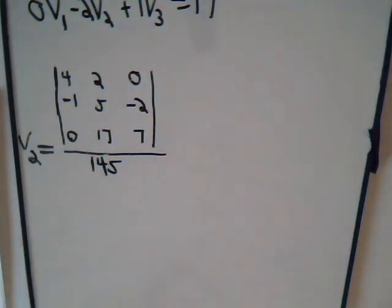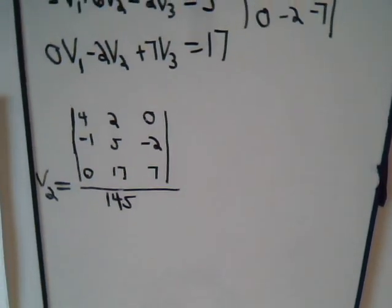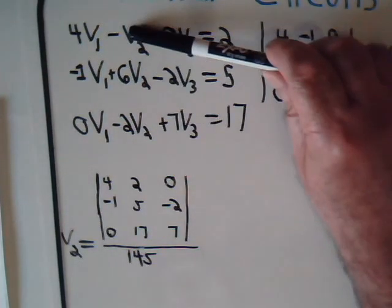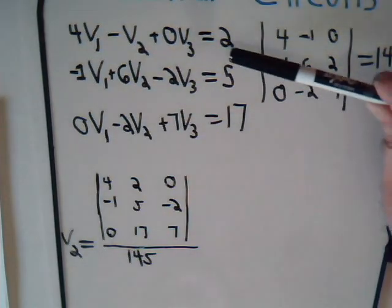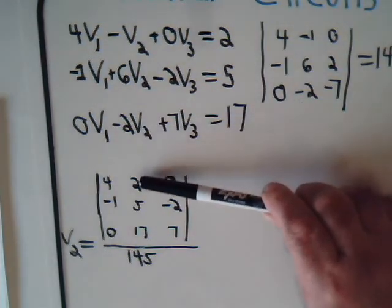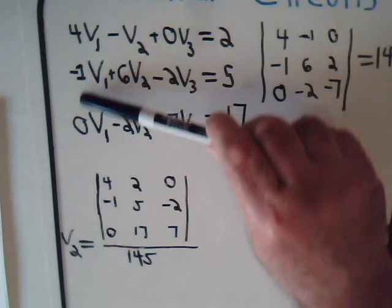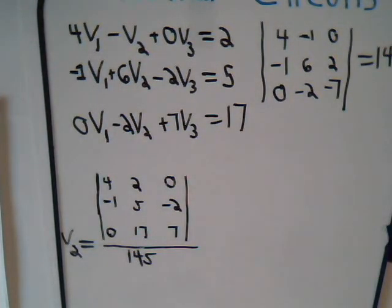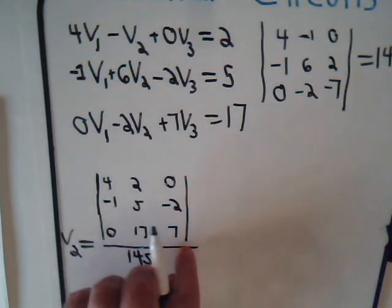The expression for V2 is this. Here was our three node equations and we replaced the V2 column with this column now. And this column, the V1 column and the V3 column, they stay the same. So let's quickly determine what V2 is.